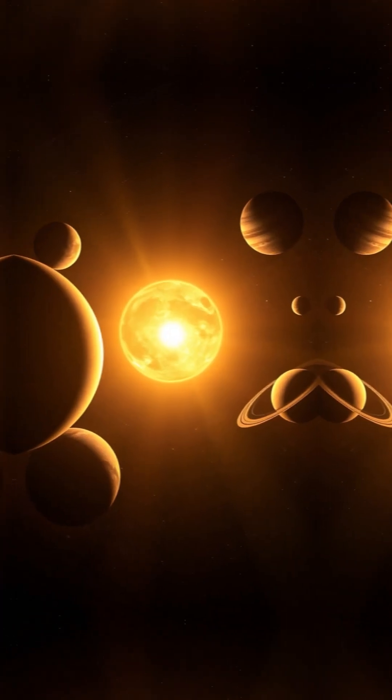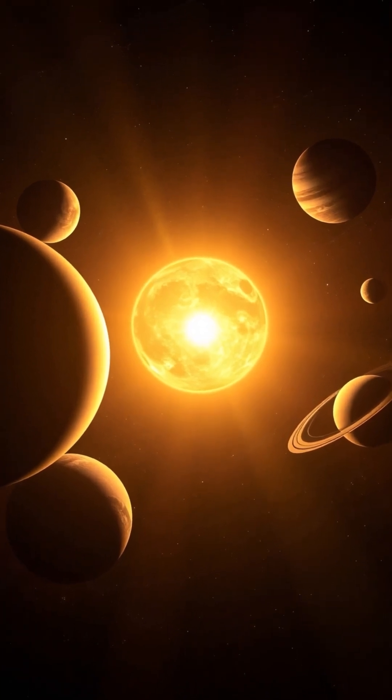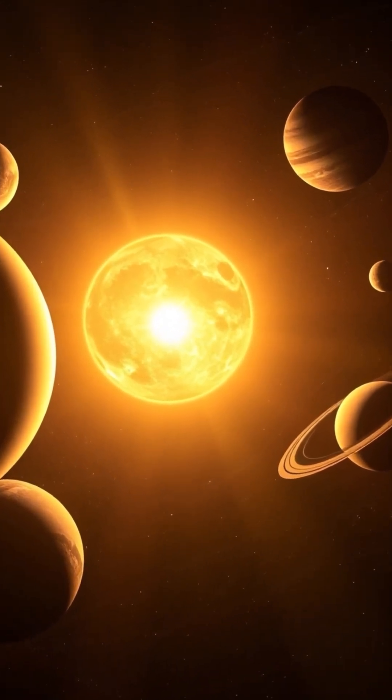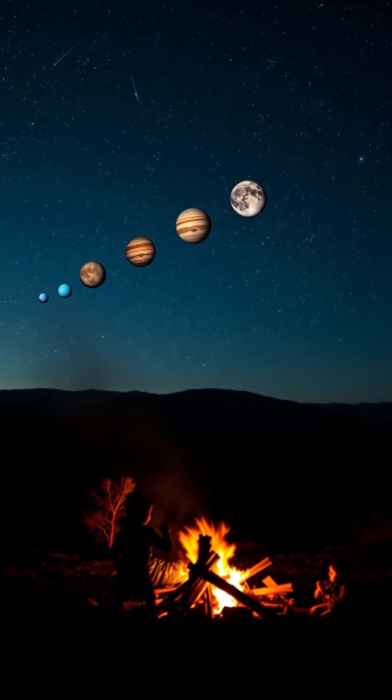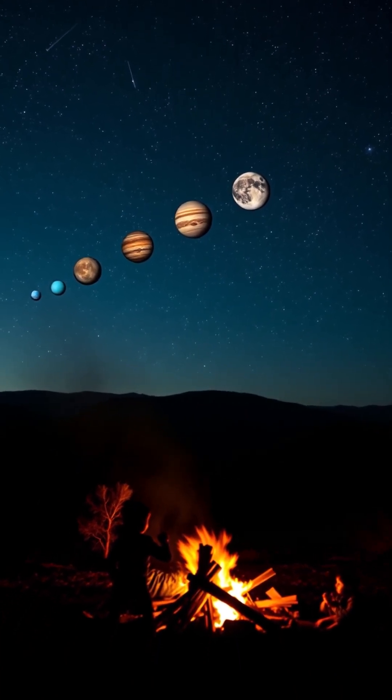This configuration creates an optical illusion known as a planetary parade, where the planets appear clustered together in the sky. This alignment is part of a broader celestial event visible from now until mid-February 2025.